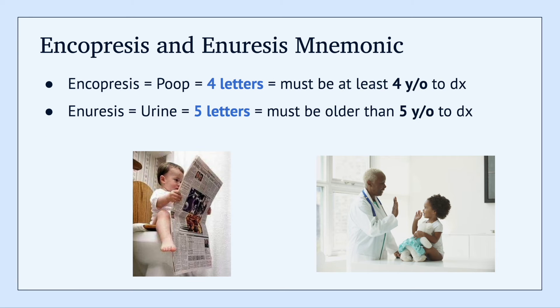You might be wondering how to keep the ages for encopresis and enuresis in mind. Encopresis deals with feces, also known as poop. Poop is four letters, so you have to be at least four years old to diagnose it. Enuresis, on the other hand, involves urine. Urine is five letters, so you must be older than five years old to diagnose it.